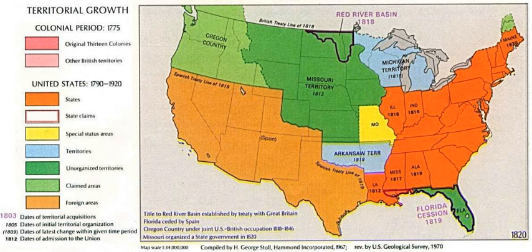If a dissolution of the Union must take place, let it be so. If civil war, which gentlemen so much threaten, must come, I can only say, let it come. Northern Representatives outnumbered the South in House membership 105 to 81. When each of the Restrictionist provisions were put to the vote, they passed along sectional lines: 87-76 in favor of prohibition on further slave migration into Missouri, and 82-78 in favor of emancipating slave offspring at age 25. The enabling bill was passed to the Senate, where both parts were rejected — 22-16 opposed to restricting new slaves in Missouri, and 31-7 against gradual emancipation for slave children born post-statehood. House antislavery restrictionists refused to concur with the Senate proslavery anti-restrictionists, and Missouri statehood would devolve upon the 16th Congress in December 1819.